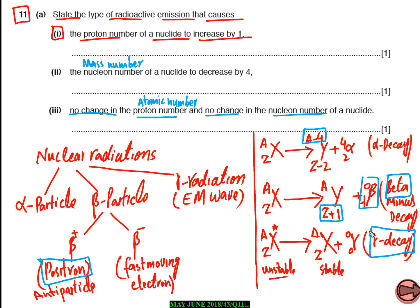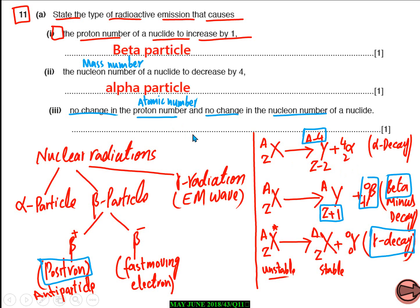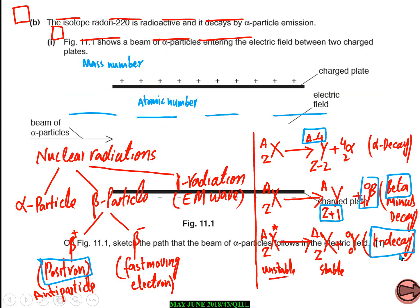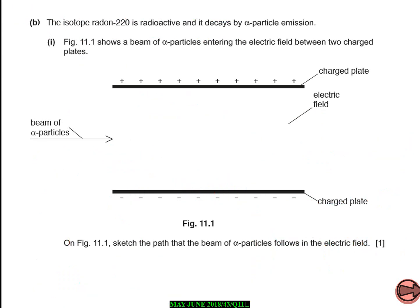If you have this understanding, the question is straightforward. When writing your answers, write beta particle and alpha particle. But please remember: do not say gamma particle, because gamma radiation consists of rays — so say gamma rays, not gamma particle. That's all for part A.